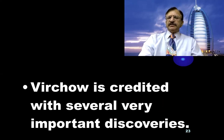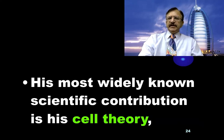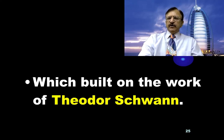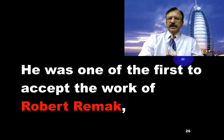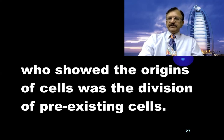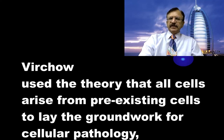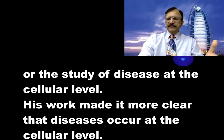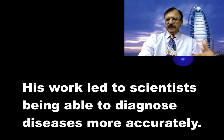Virchow is credited with several important discoveries. His most widely known scientific contribution is cell theory, built on the work of Theodor Schwann. He was one of the first to accept the work of Robert Remak, who showed the origin of cells was the division of pre-existing cells. Virchow used this theory to lay the groundwork for cellular pathology — the study of disease at the cellular level — making it clear that diseases occur and can be diagnosed at the cellular level.